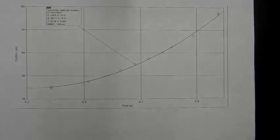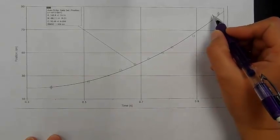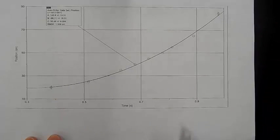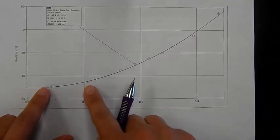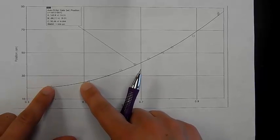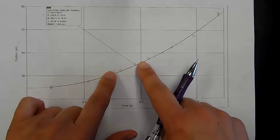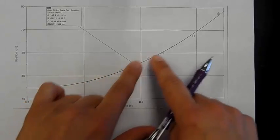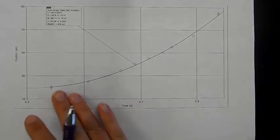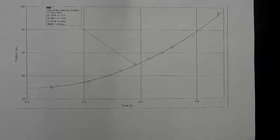Here we have a position-time graph, and you can see this is a curve, so this is a not-constant change in position. Over equal time periods, as we go along, our change in position increases. So that must mean that our velocity increases as well.